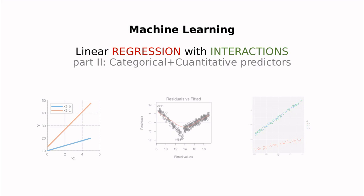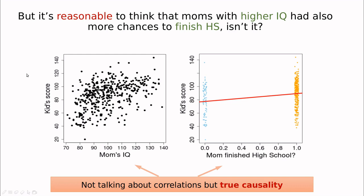In the first part we discussed the importance of interactions and capturing interactions properly, but we didn't answer this question that it looks reasonable to think that higher IQ is related to finishing high school. The difference between this example and the ones in the previous video is that here the mom's IQ is a quantitative variable and the question 'mom finished high school' is a factor, a qualitative variable.